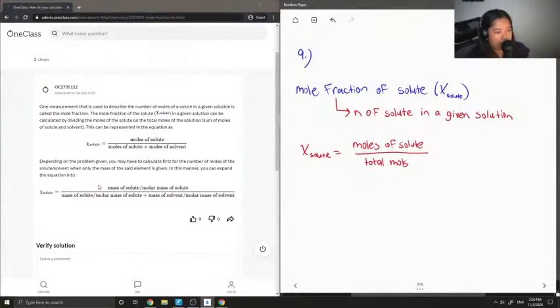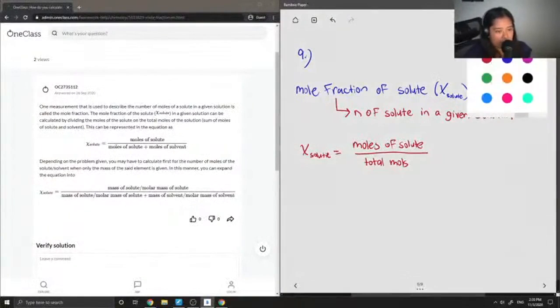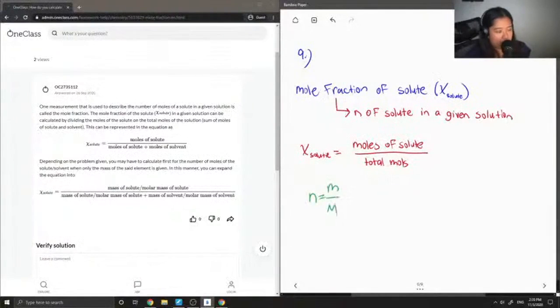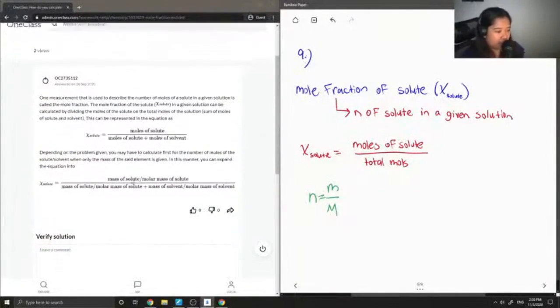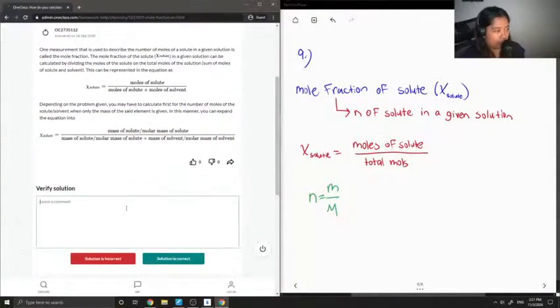So here they just have an example where you just need to calculate the number of moles first. So just to simplify it, number of moles is equal to mass over molar mass. So if a question gives you just the masses of the solute and the solvent, then you just need to calculate the number of moles first and then you can plug it into your mole fraction equation.